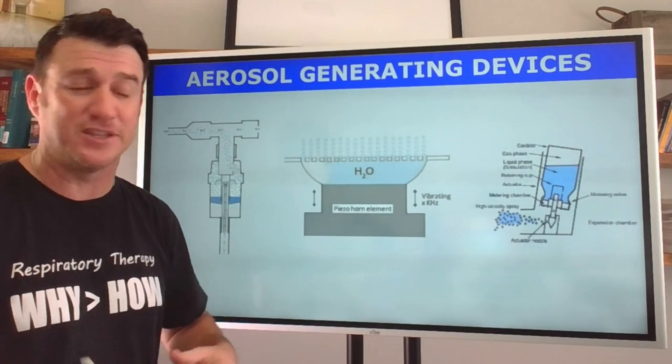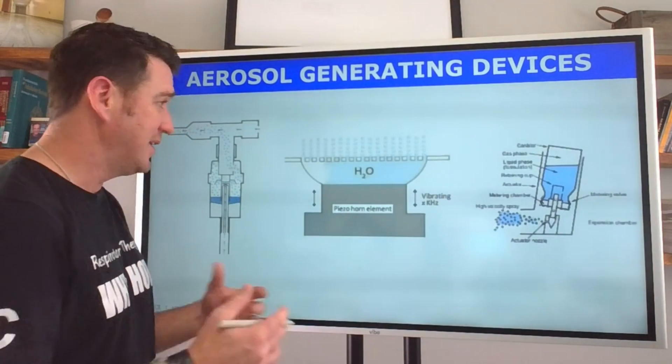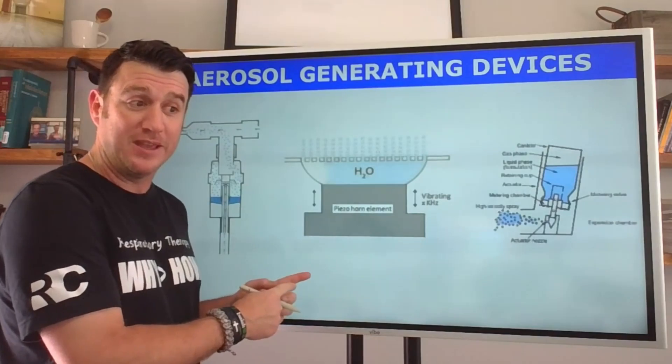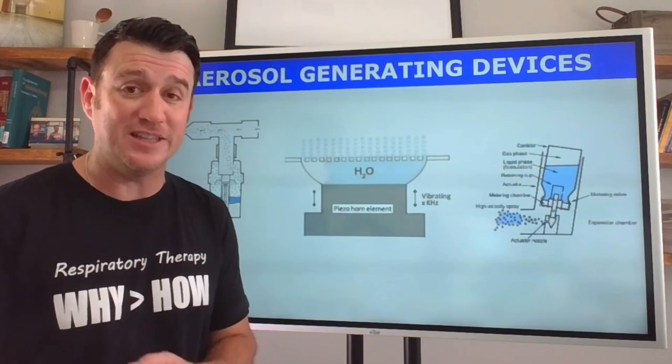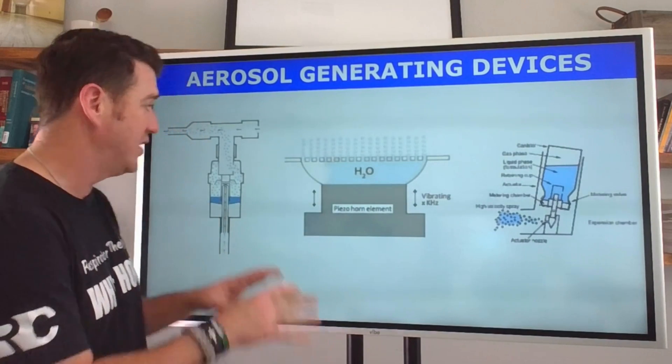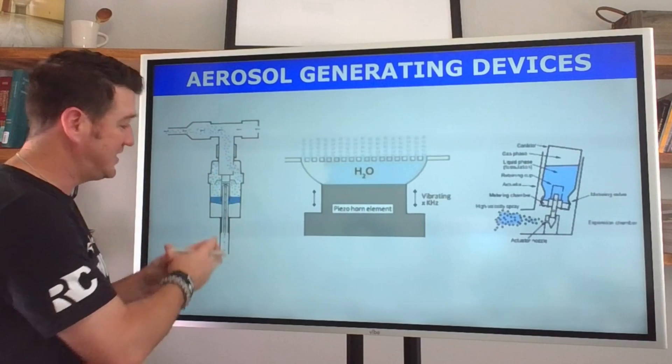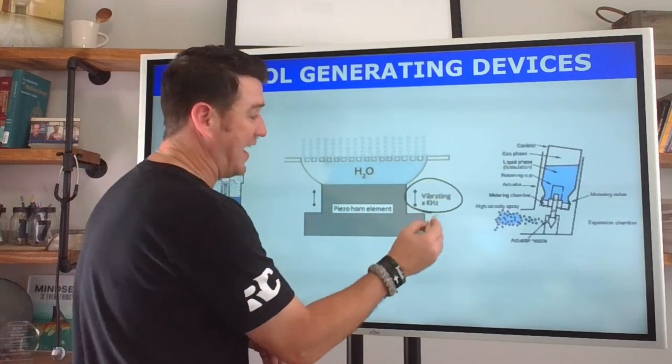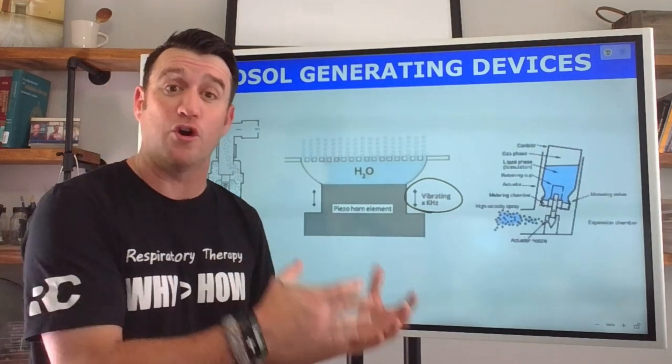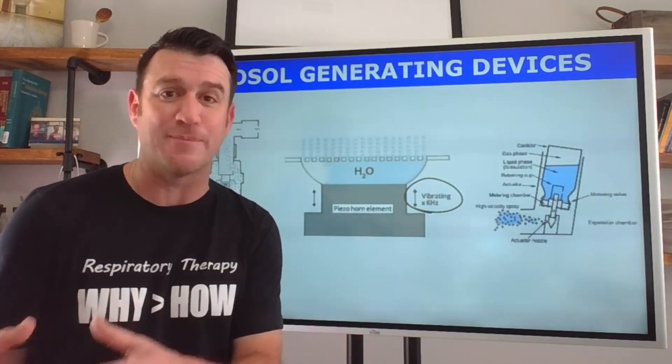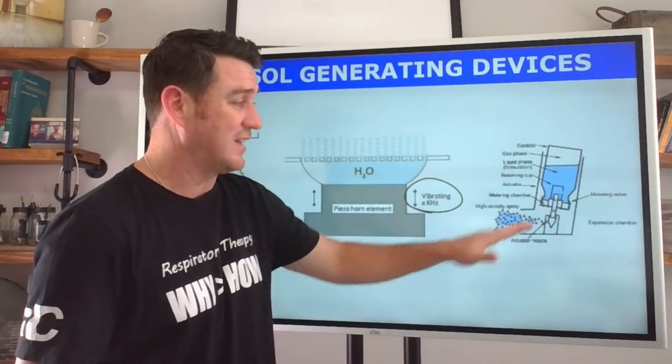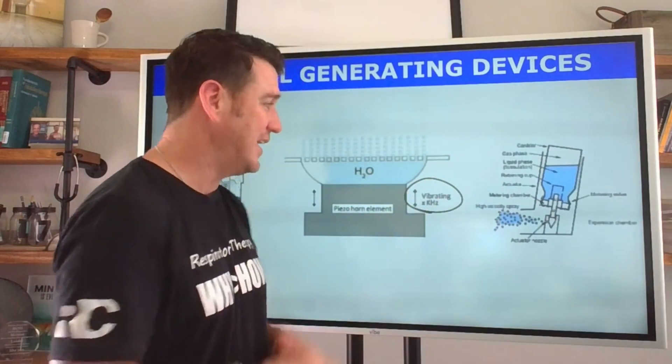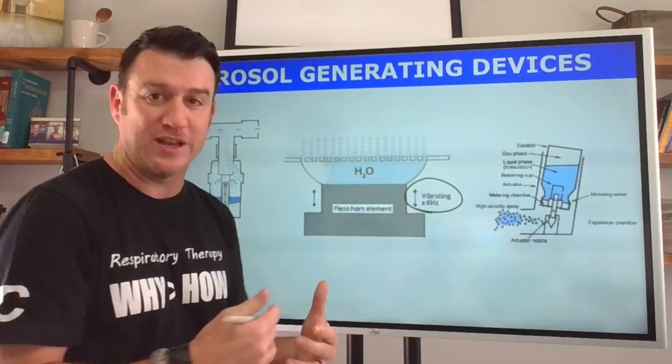Let's get started with a quick recap of different types of devices related to aerosol generation. This is important because depending on which device you are using, it's going to determine where you're going to put it into the ventilator circuit. We have examples of standard disposable jet nebulizers, vibration which brings us to ultrasonic nebulizers and vibrating mesh nebulizers, and then the pressurized metered dose inhaler, the pMDI.